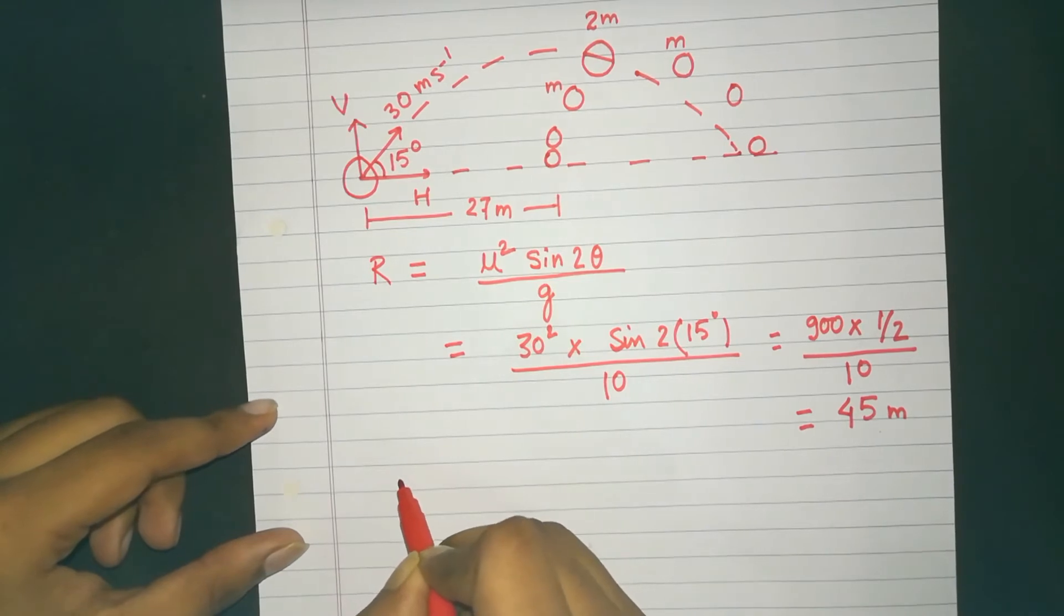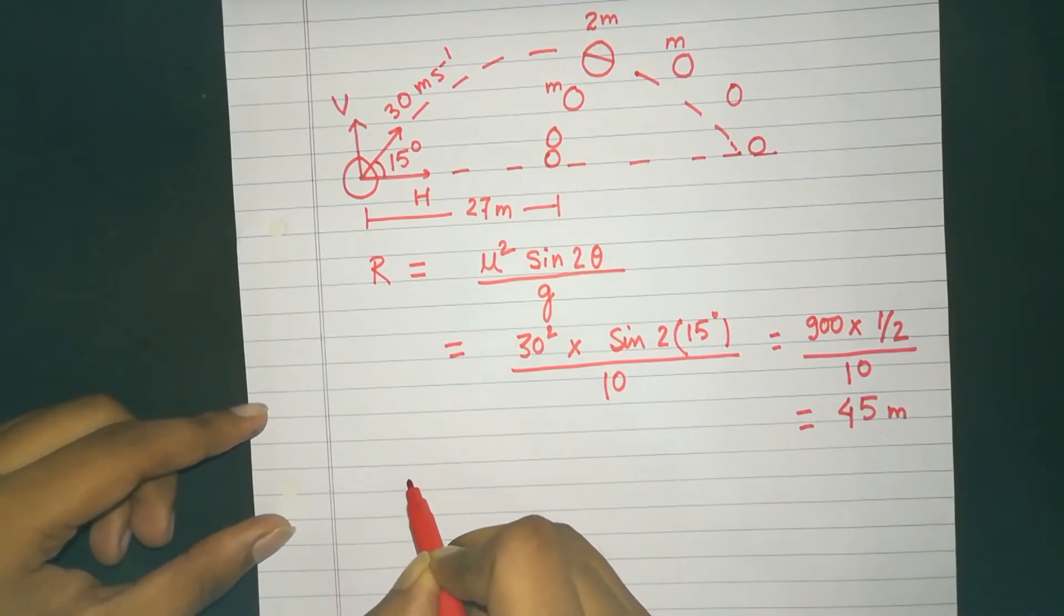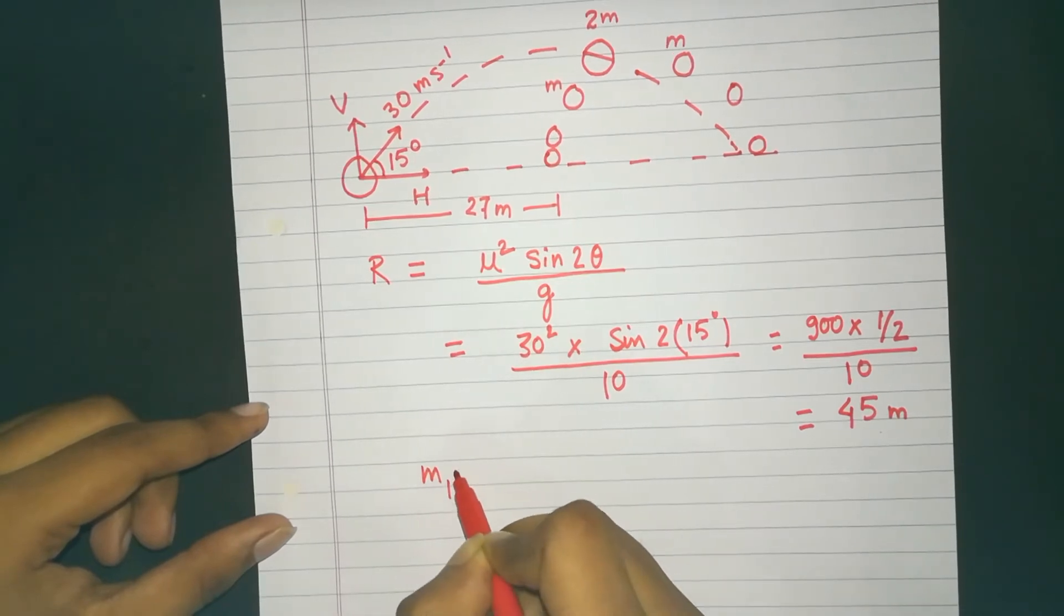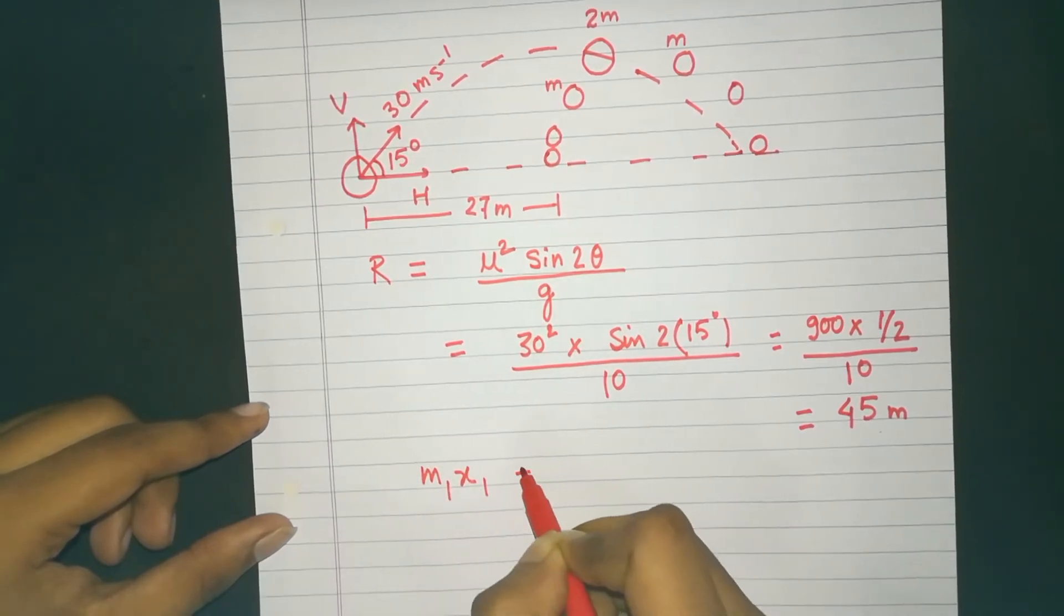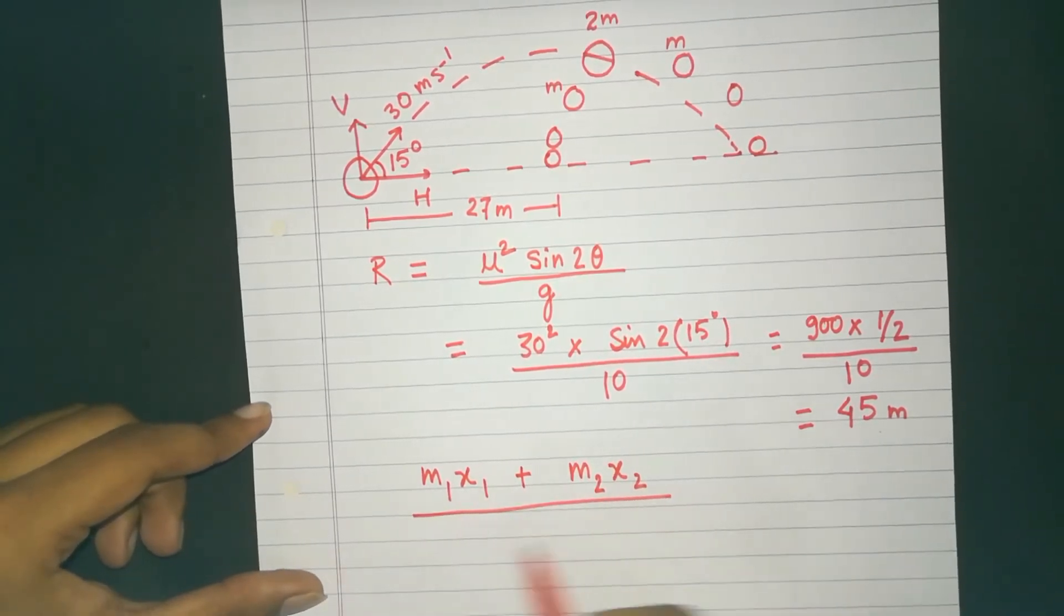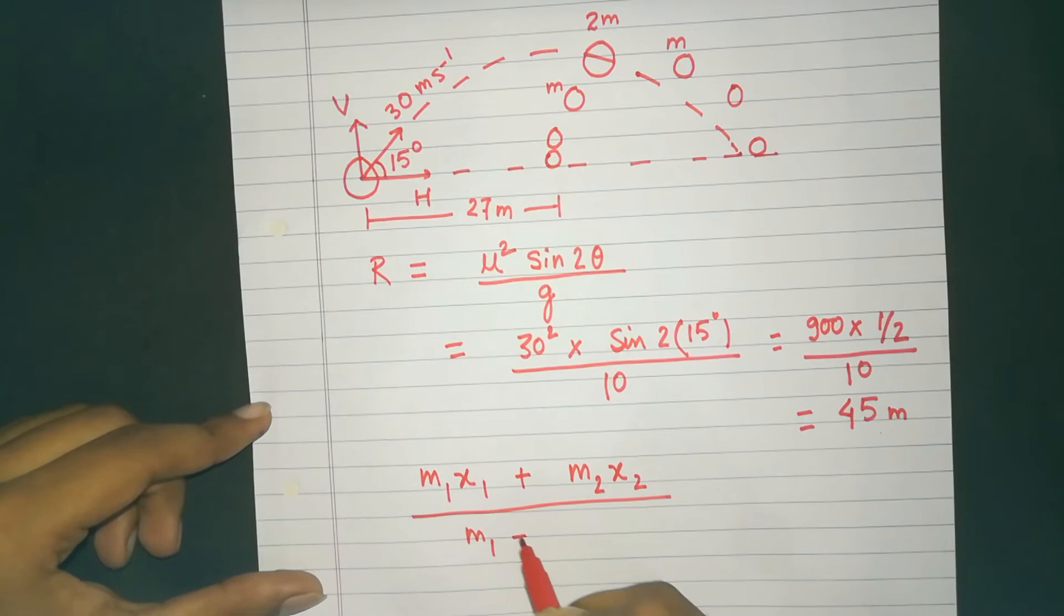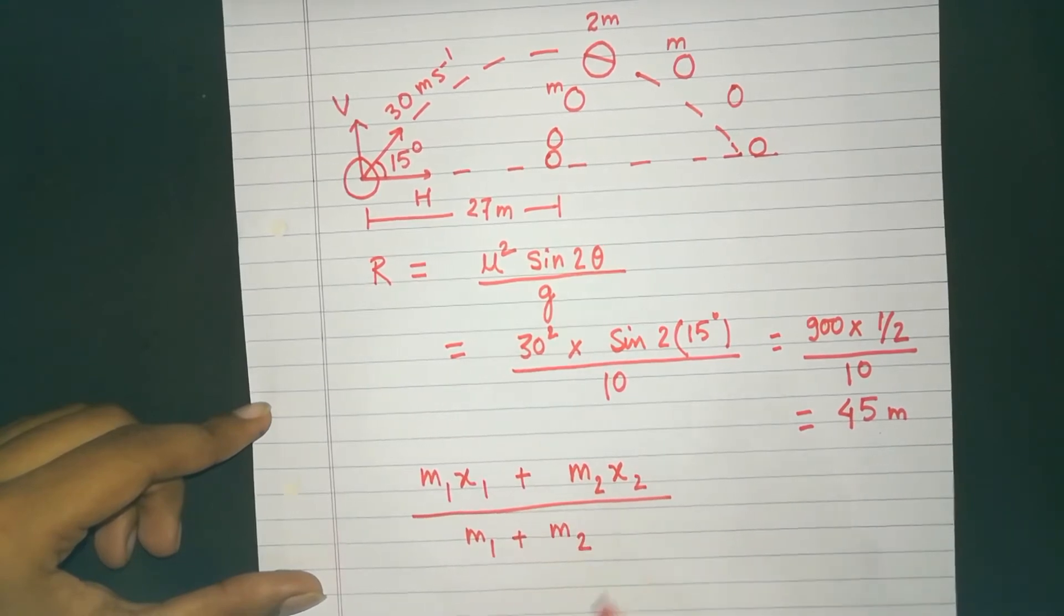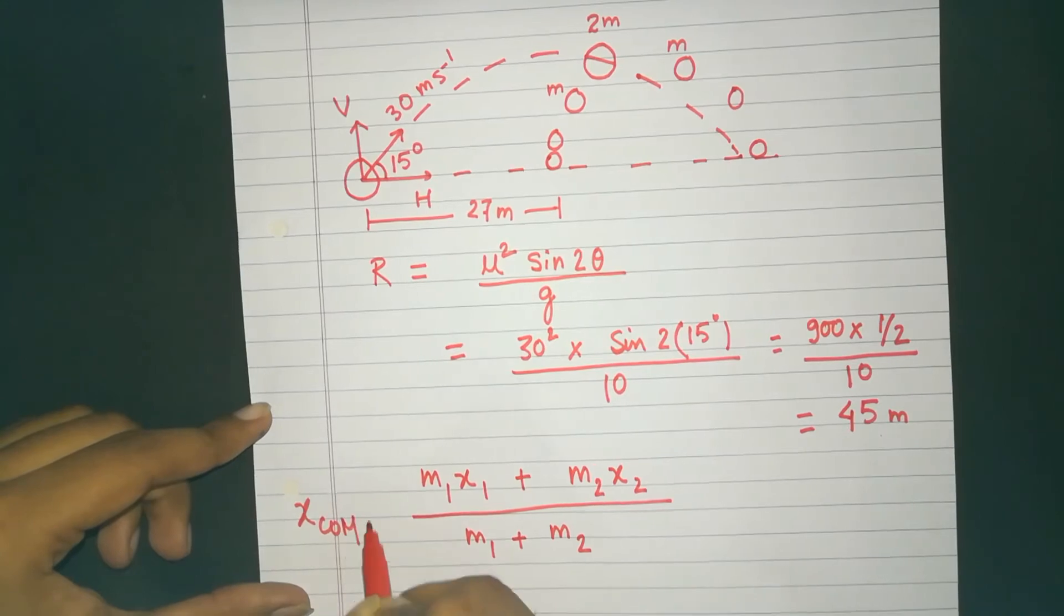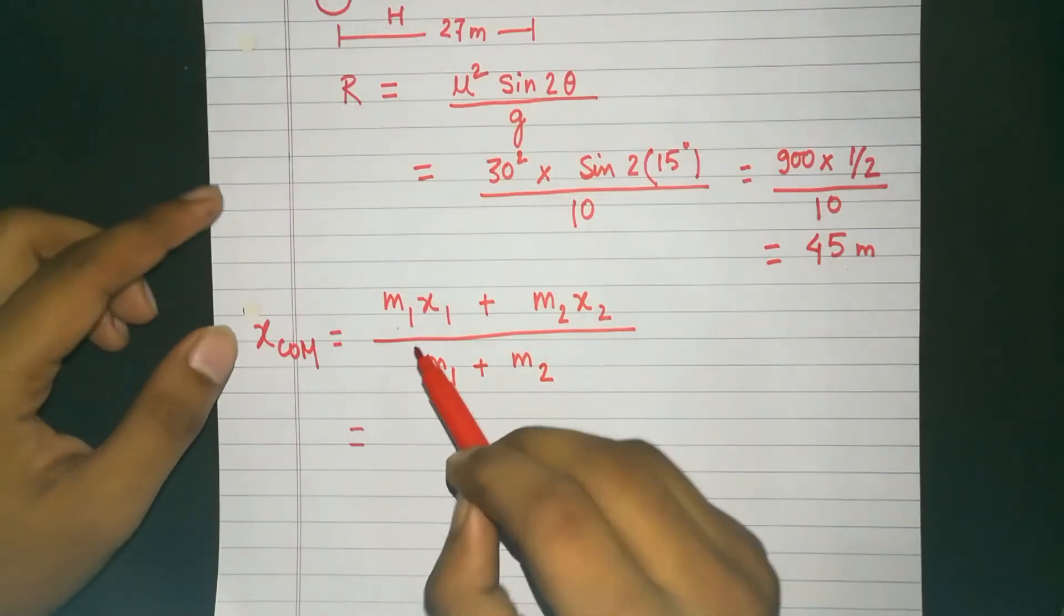So we know that the formula for center of mass is M1 x1 plus M2 x2 divided by M1 plus M2. That is the position of the center of mass.